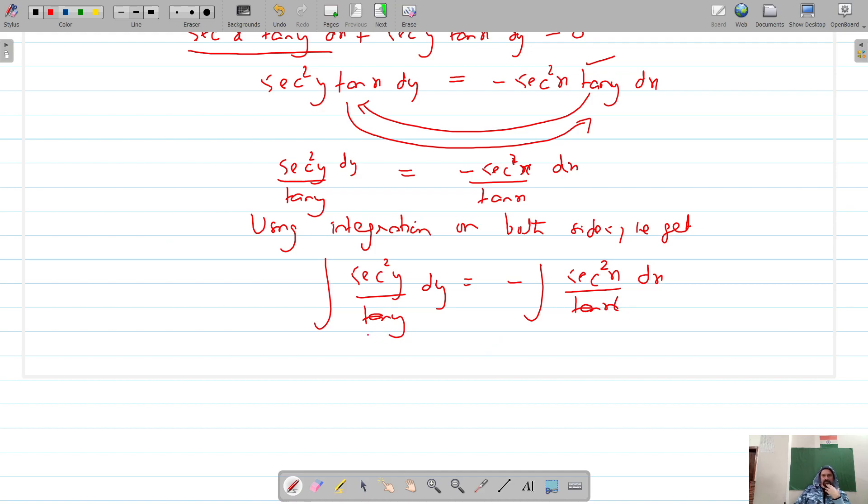We know that this is the function and secant square y is the differentiation of tan y. This is f dash of x. This is of the form f dash x upon f of x, and the integration of f dash x of this form upon f of x is log of f of x.